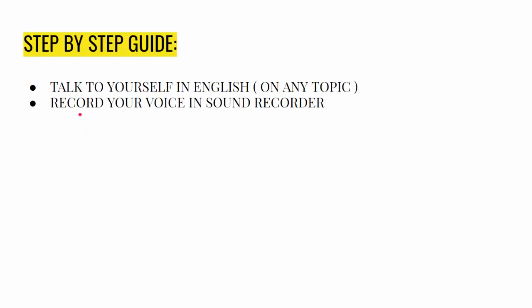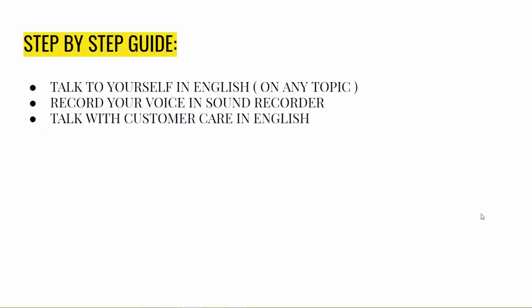The second tip is: record your voice in a sound recorder — this is one of the most crucial points for improving yourself. Whenever you talk to yourself on any topic, hold your smartphone and record your voice. When you listen back to the recording, you can judge what mistakes you're making in speaking English. After identifying those mistakes, you can improve them on a daily basis. This is something I did a lot to gradually improve my English speaking skills.